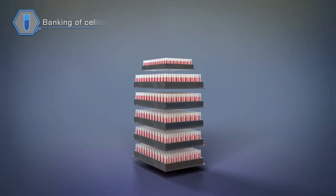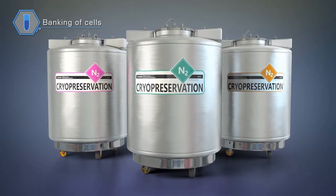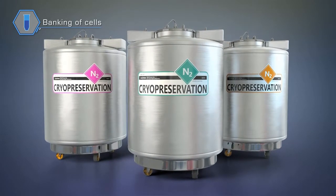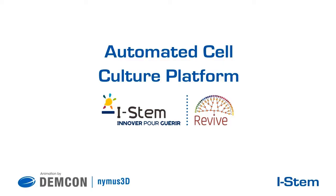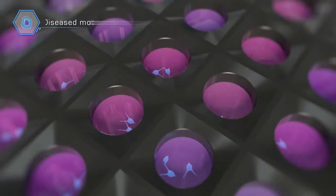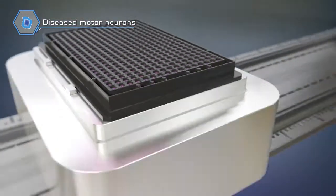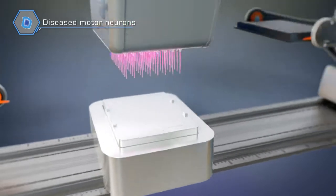These cells are subsequently stored in cryogenic containers for later use, providing the backbone of iSTEM's compound screening ability. The ability to grow and differentiate cells enables us to create large numbers of genetically diseased cells for research purposes.